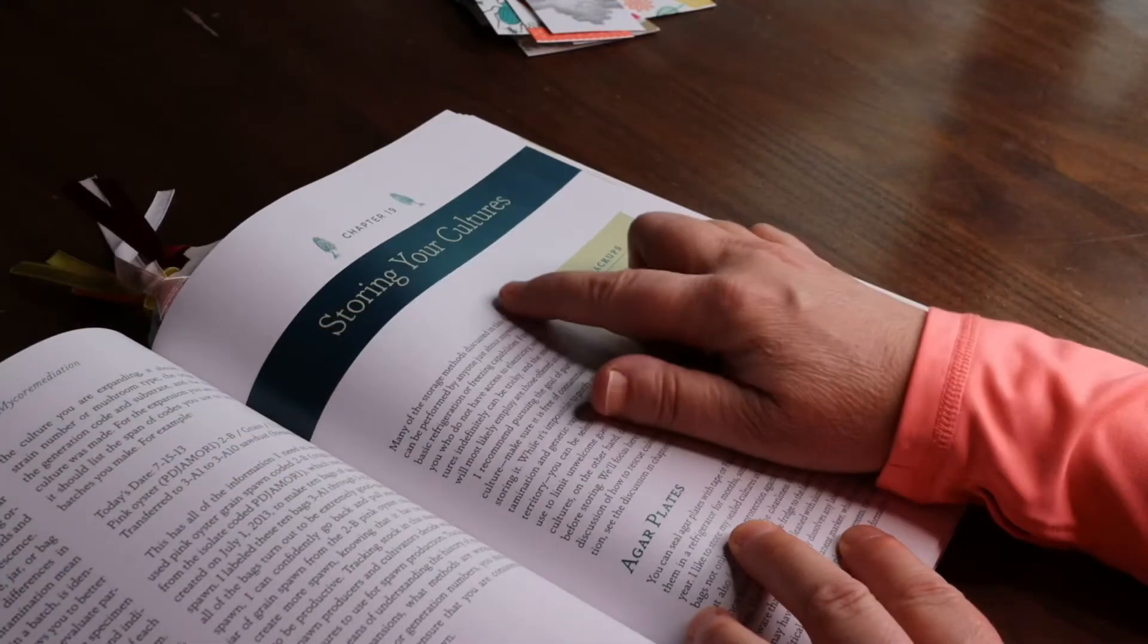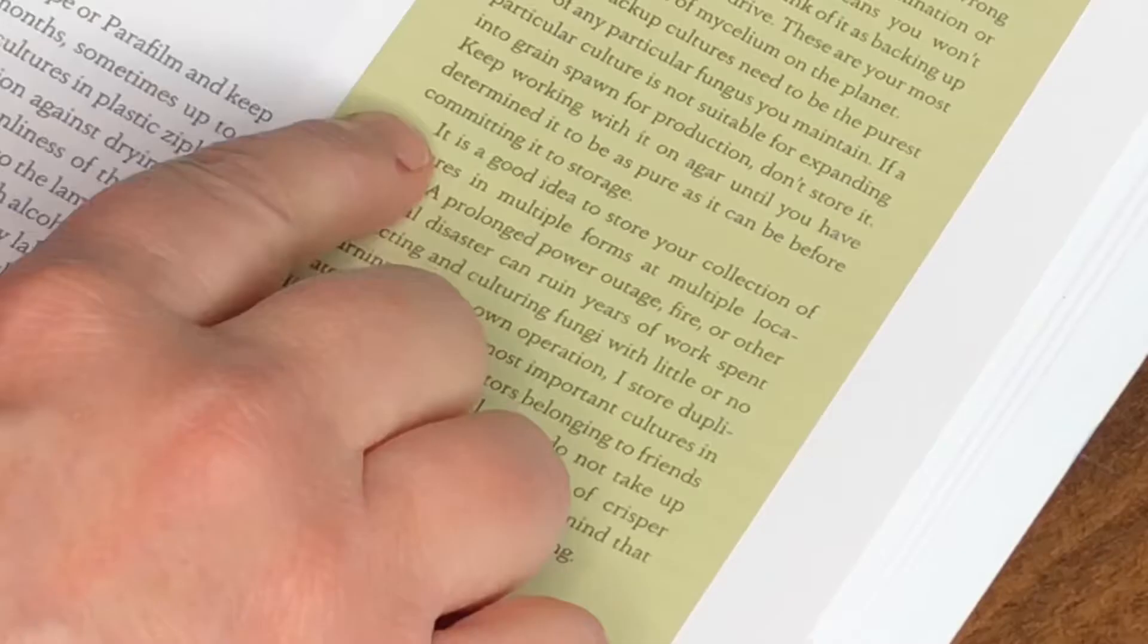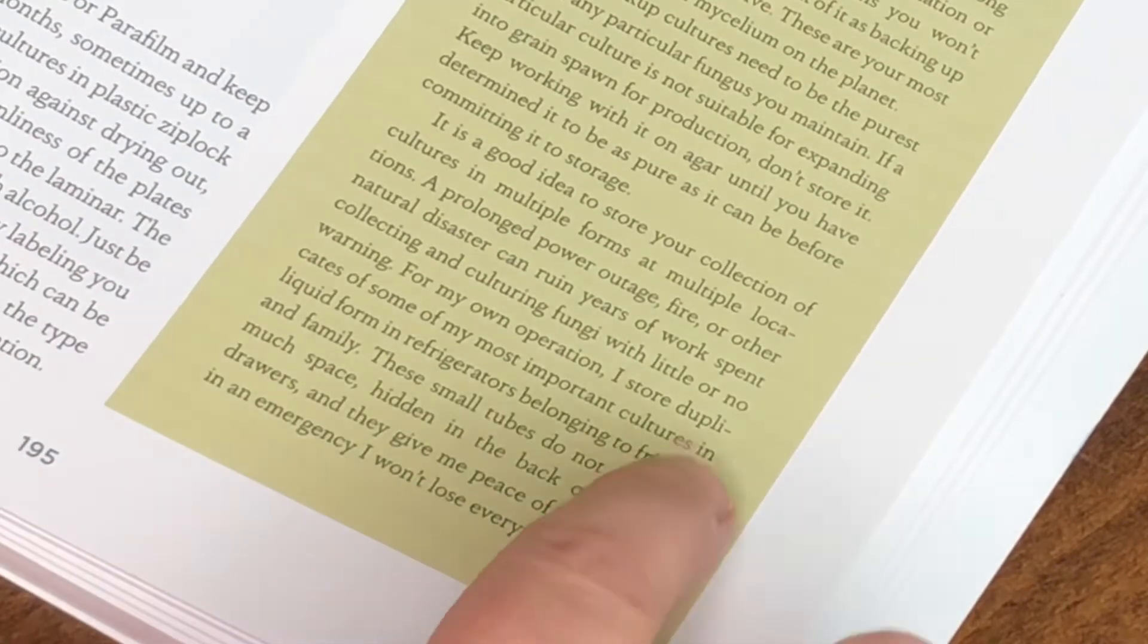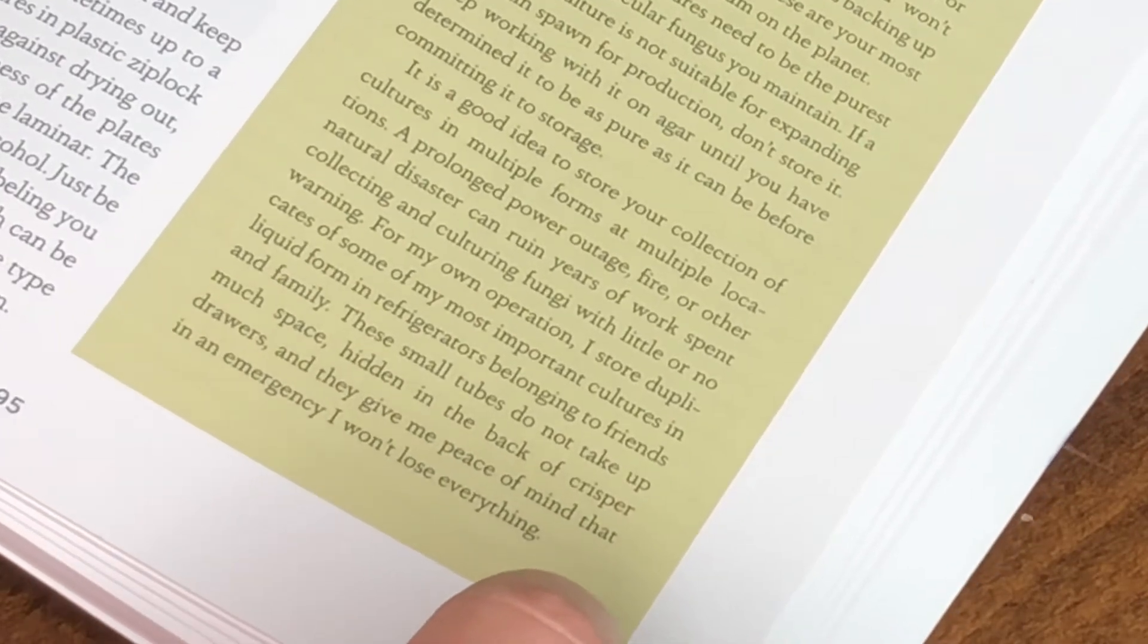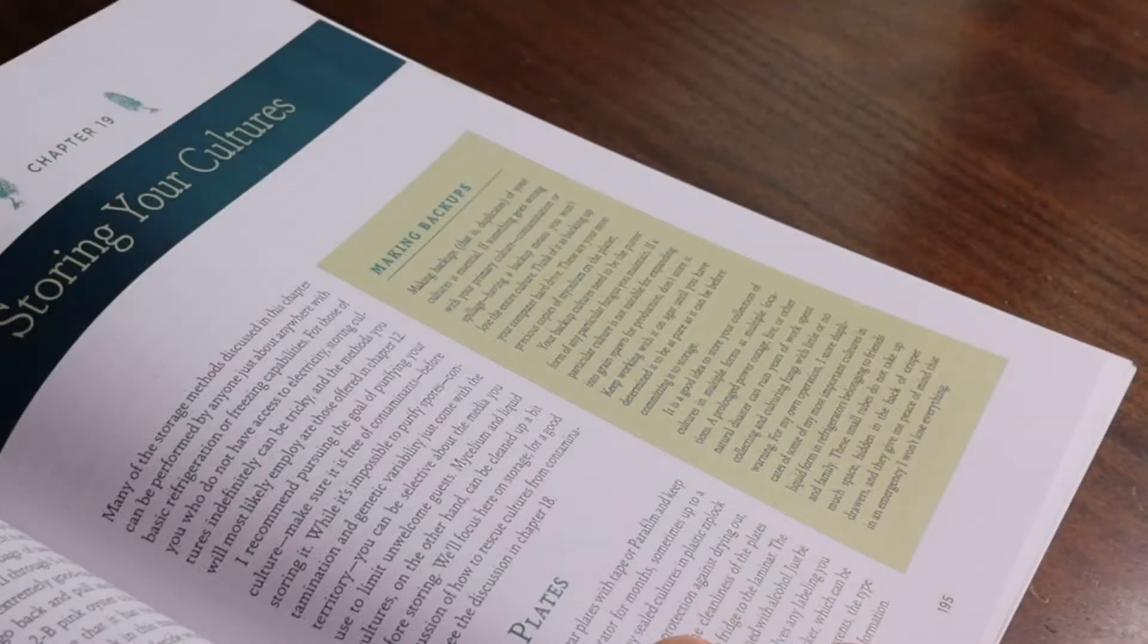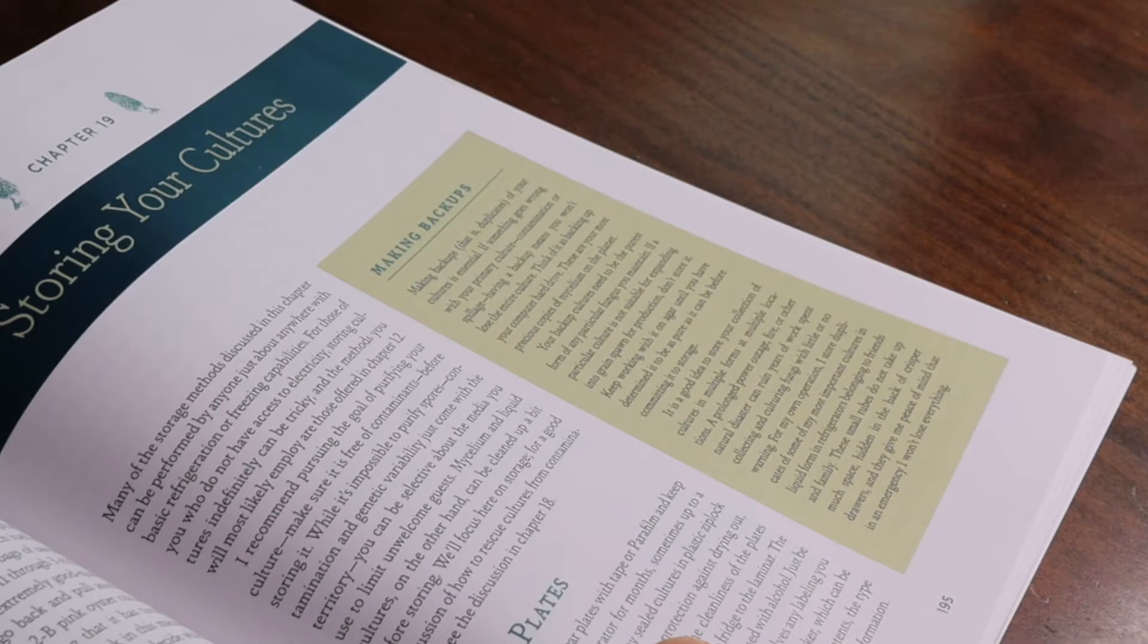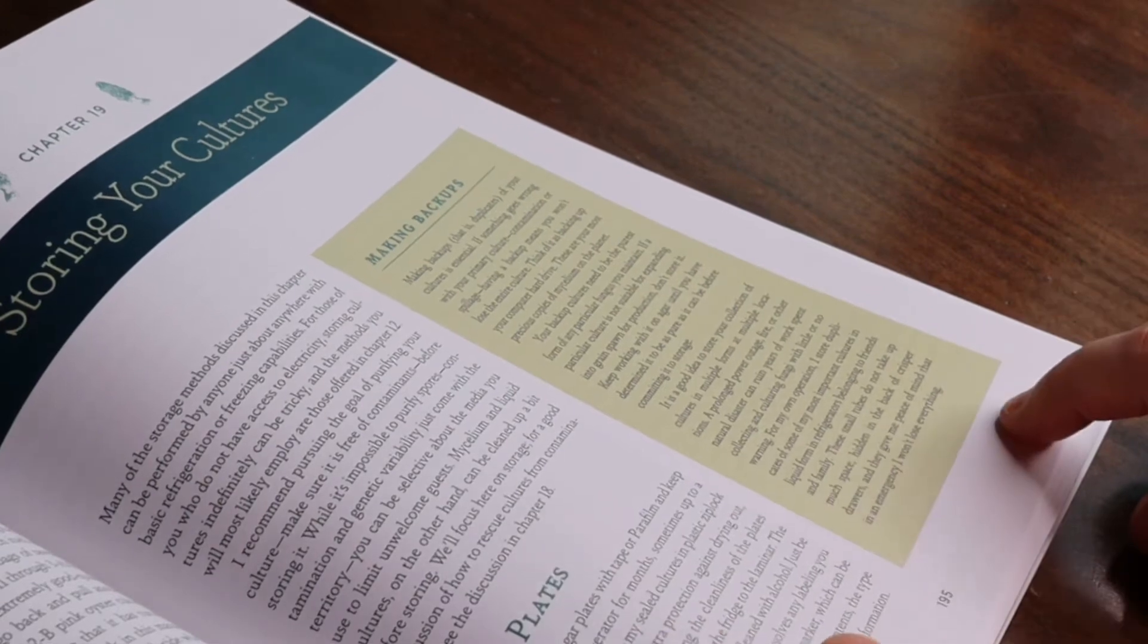He gives a lot of helpful suggestions in storing the cultures, but one thing he said struck me as brilliant. It is a good idea to store your collection of cultures in multiple forms at multiple locations. A prolonged power outage, fire, or other natural disaster can ruin years of work spent collecting and culturing fungi with little or no warning. For my own operation, I store duplicates of some of my most important cultures in liquid form in refrigerators belonging to friends and family. These small tubes do not take up much space hidden in the back of crisper drawers, and they give me peace of mind that in an emergency I won't lose everything. That is pretty cool, hey? Good idea.